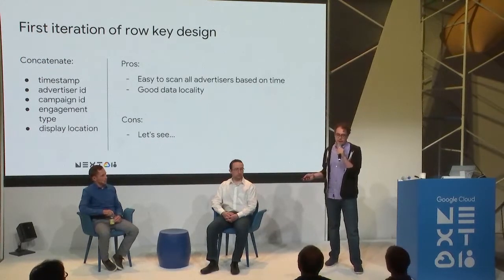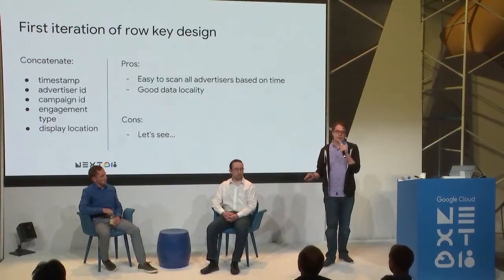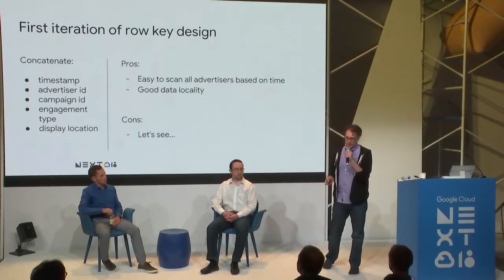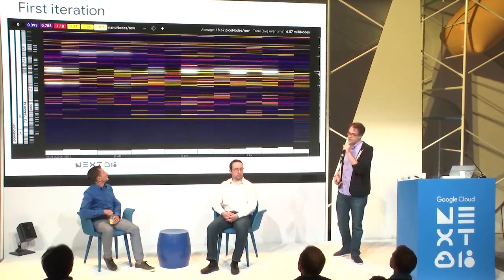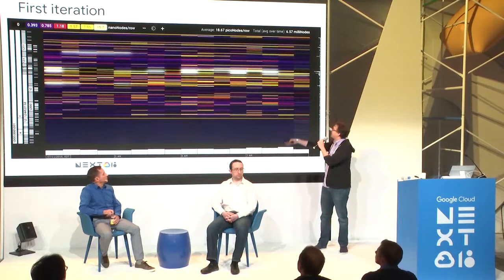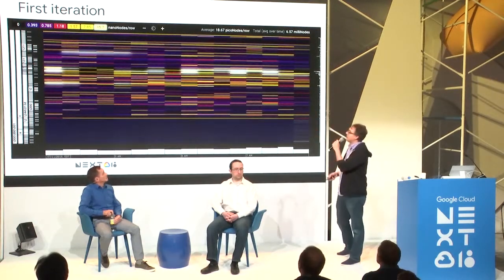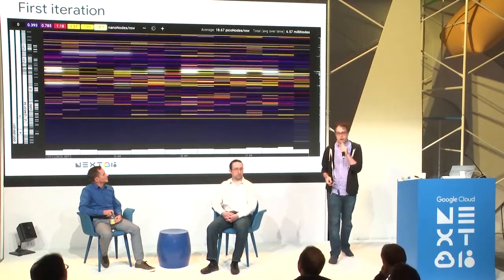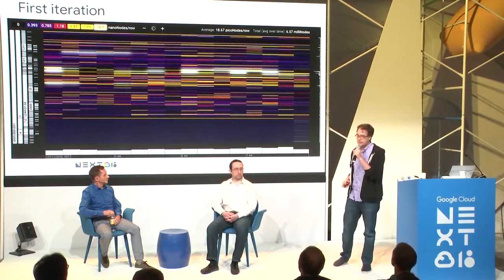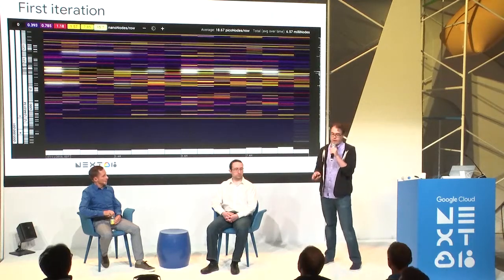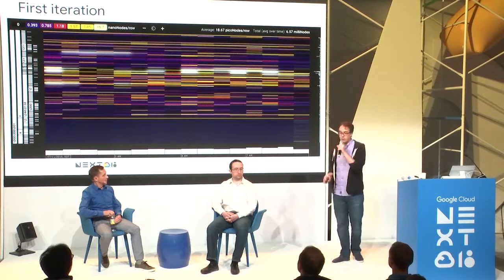The pros: it's easy to scan across all advertisers for a time range, and all queries will generally include a time range. Good data locality since all data for an advertiser is grouped. But looking at Key Visualizer with this schema, it's not great — there's a big spot of basically no traffic, and a very pronounced line of hot keys corresponding to the current week, since most queries target the most recent data. This would lead to very hot nodes hosting that small key range.